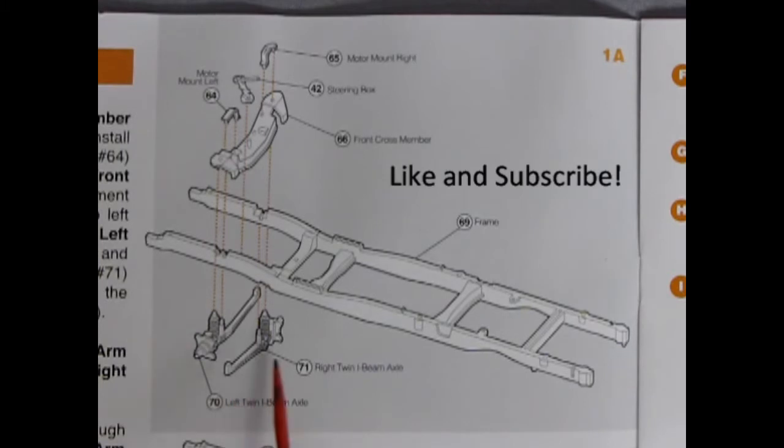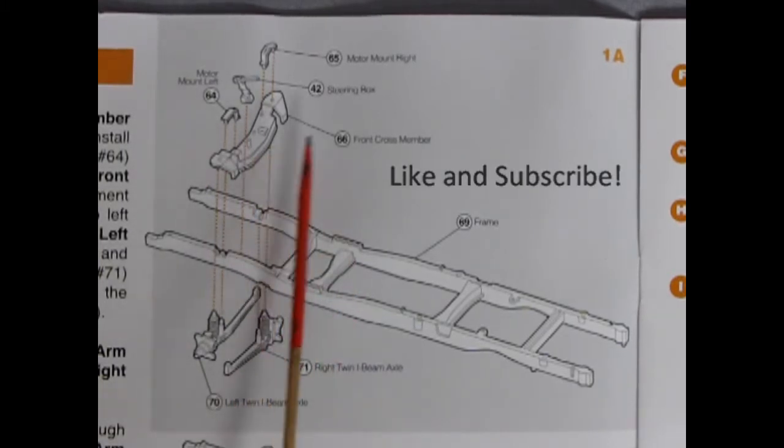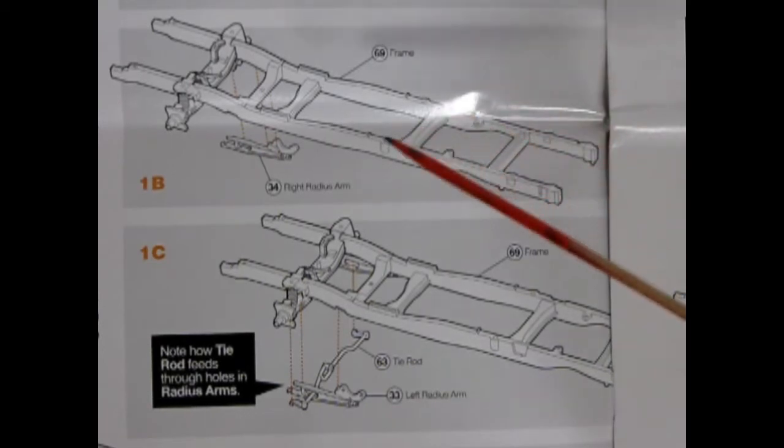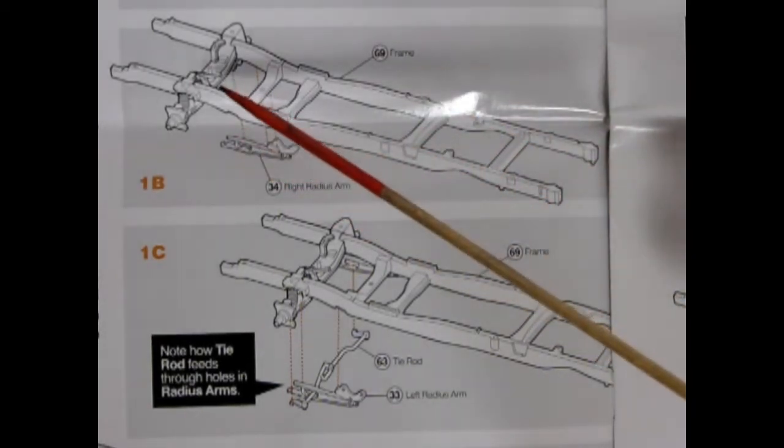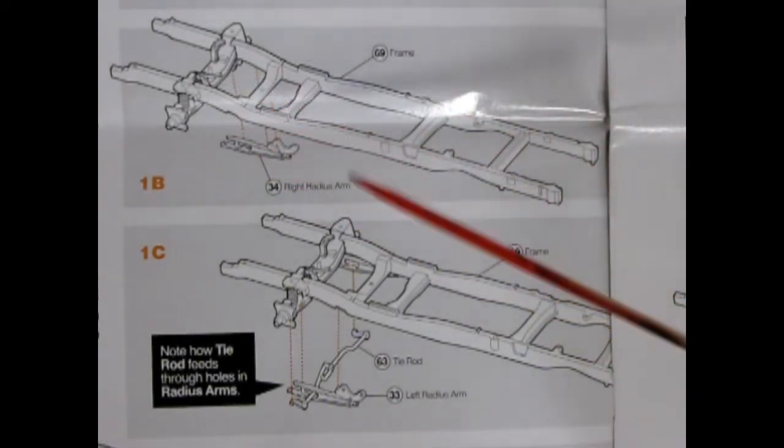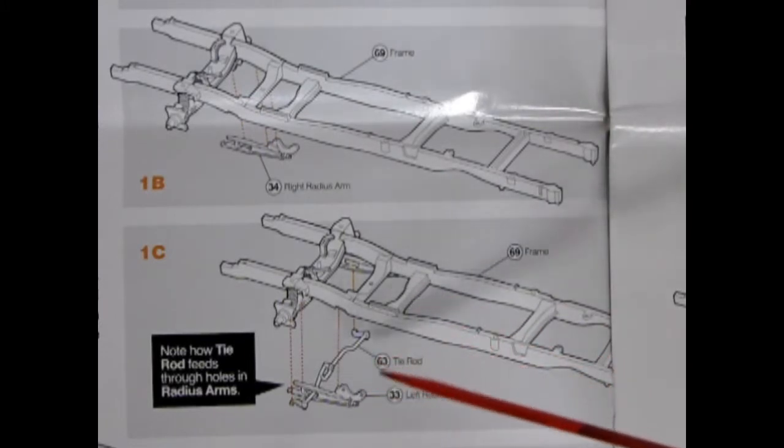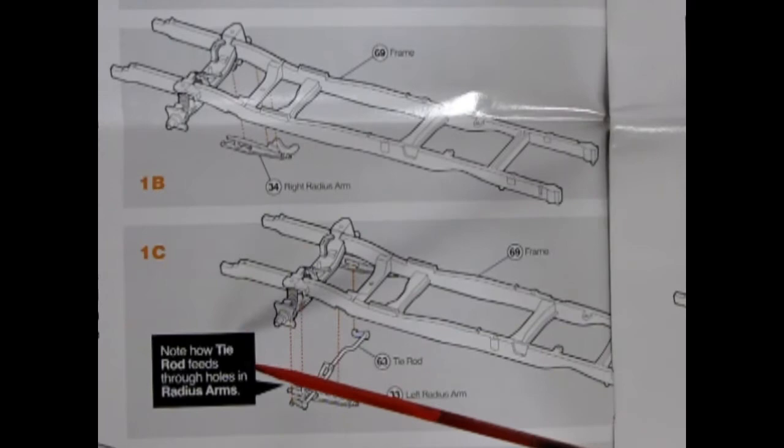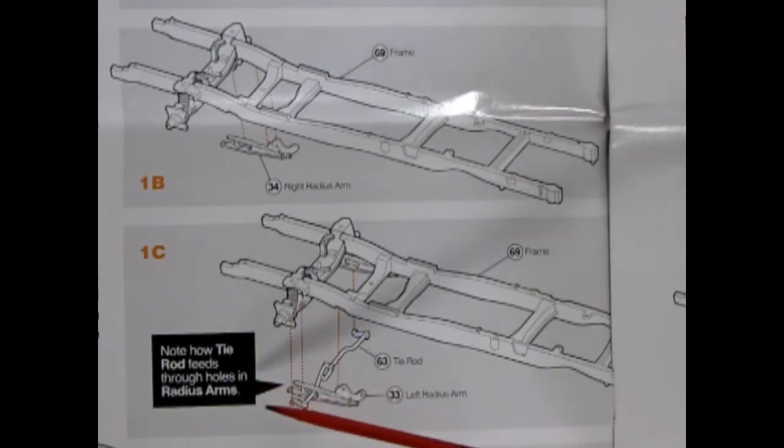We've got our right twin I-beam axles, our front steering cross member, steering box and motor mounts. Our second panel here shows our right radius arm gluing up onto the frame. And our third panel here shows the tie rod and left radius arm gluing up into the frame and it says note how the tie rod feeds through holes in radius arms.